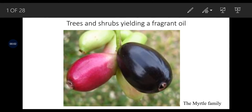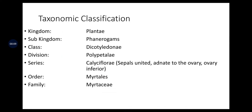Myrtaceae is a family having trees and shrubs yielding fragrant oil, also known as the Myrtle family. Taxonomy classification belongs to Kingdom Plantae, Subkingdom Phanerogamae, Class Dicotyledoneae, Division Polypetalae, Series Calyciflorae — that is, sepals united, adnate to the ovary, ovary inferior. Order Myrtales and family Myrtaceae.